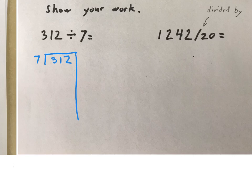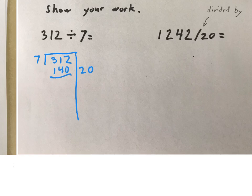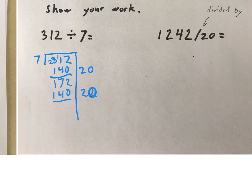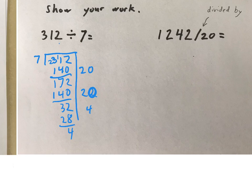If I went just 7 times 10, it's going to be only 70 — not going to get me close. So why don't I go double that? 7 times 20 will give me 140. Then I'll subtract, and I have 172 left. So why don't I do another 20? That gives me the same thing, and now I have 32 left. So I'll go just 4. That's going to be my remainder. So 20 plus 20 plus 4, the answer will be 44 remainder 4.